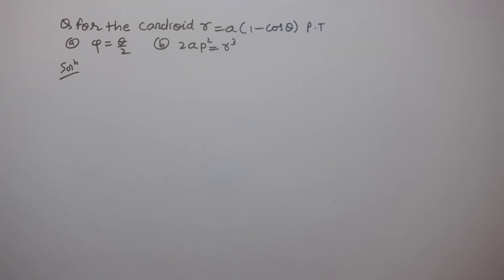Students, this is the question for the cardioid: r is equal to a(1 minus cos θ). Prove that φ is equal to θ/2. Second, prove that 2Ap² is equal to r³.